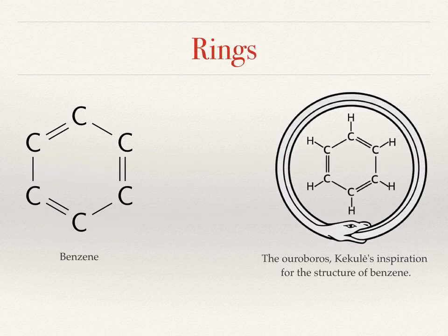One of the interesting things about the chemistry of carbon, and a few other elements besides, is that instead of just forming linear molecules where the atoms are attached to each other and form long chains, they can actually form a ring structure.